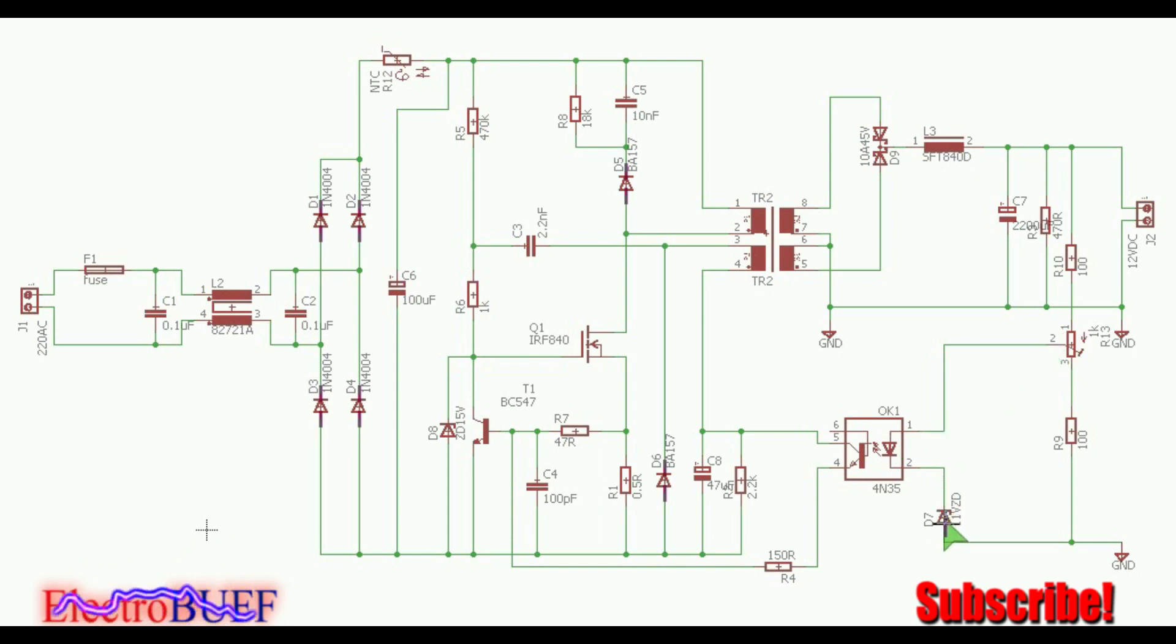This will cause this transistor to conduct, and what this does is it will connect the base of the transistor to 5 volts from the auxiliary winding. The auxiliary winding has a small rectifier diode and a small filter storage capacitor.